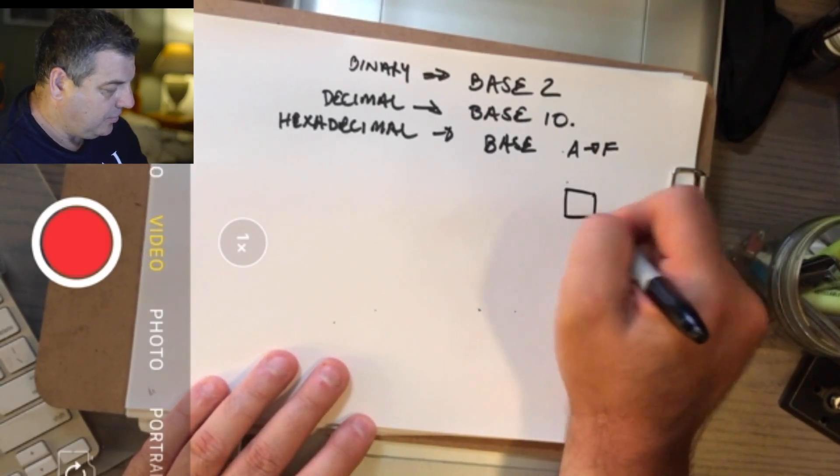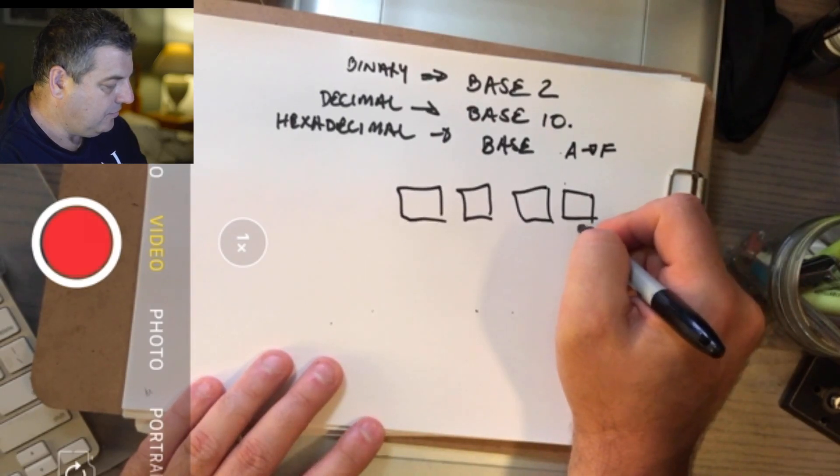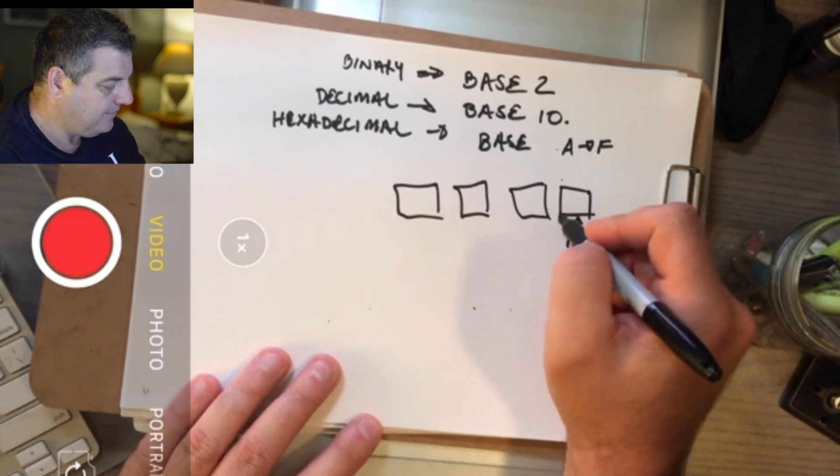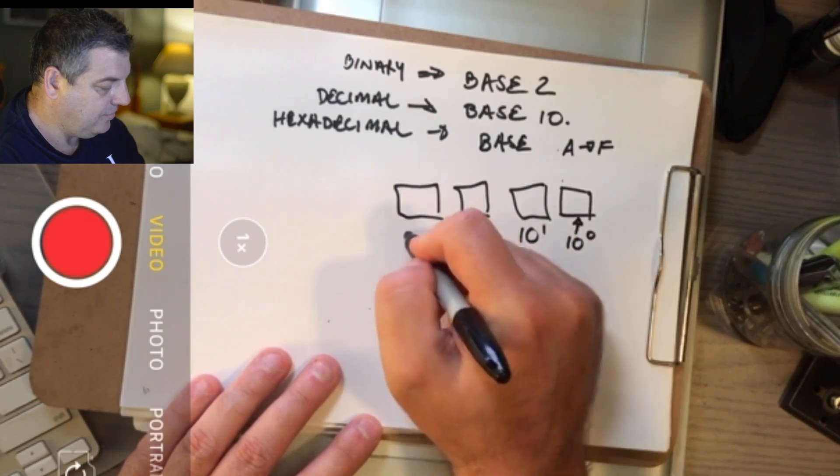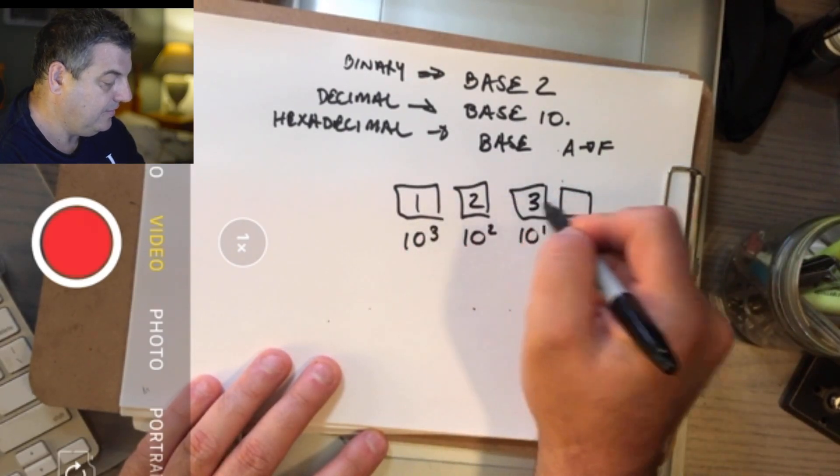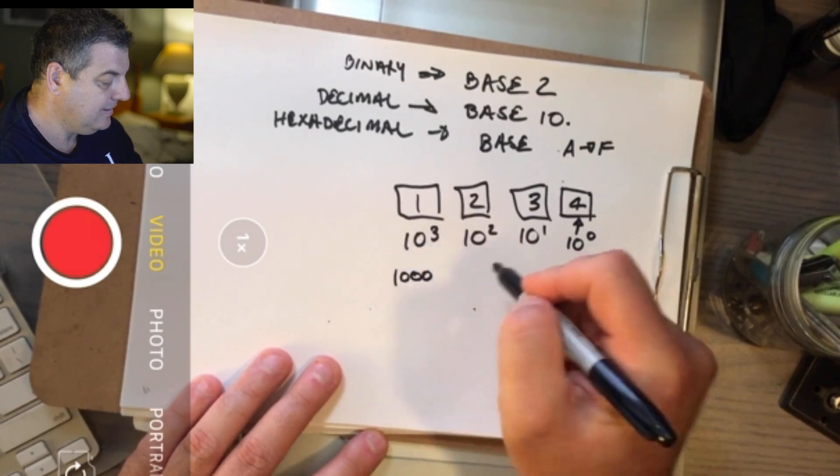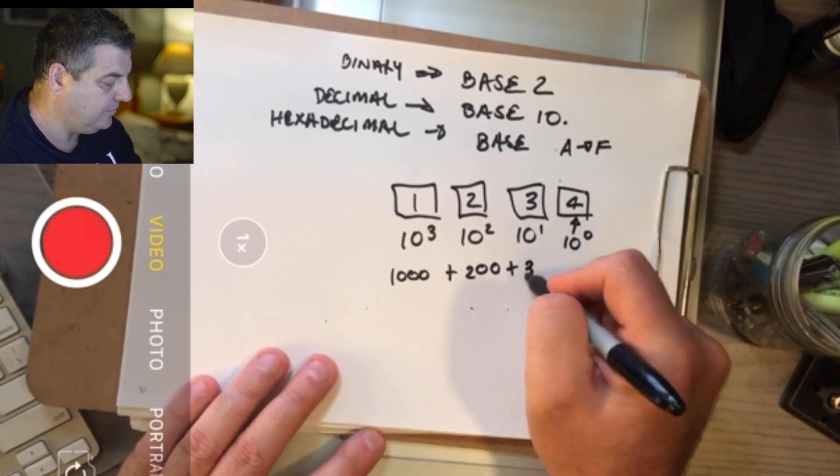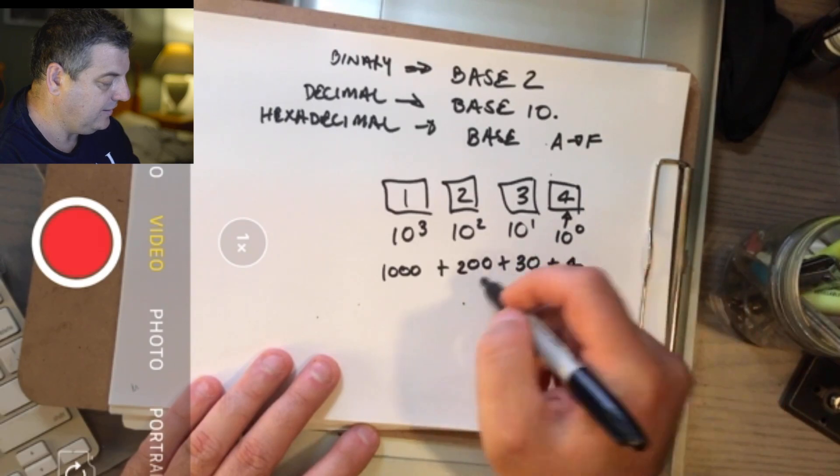Let's look at it in boxes, so we'll do four boxes here. In the first box that value is 10 to the power of 0, then 10 to the power of 1, 10 to the power of 2, 10 to the power of 3. So when you're writing out a number like 1234, what you're really doing is saying 1 times 10 to the power of 3 which is 1000, plus 2 times 10 to the power of 2 which is 200, plus 3 times 10 to the power of 1 which is 30, plus 4 times 10 to the power of 0, anything to the power of 0 is 1, so 4 times 1 is 4 and that's how you get the number 1234.